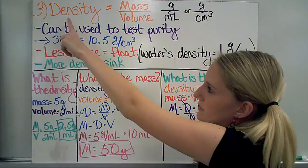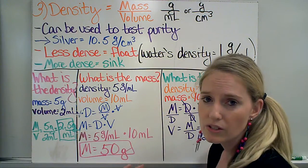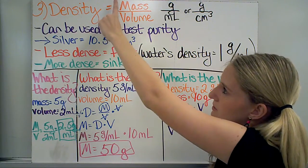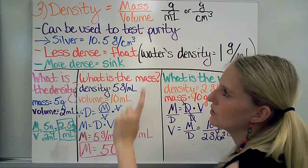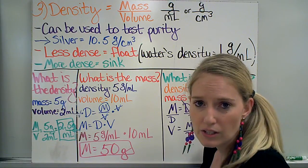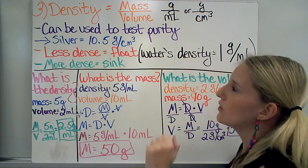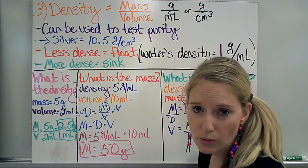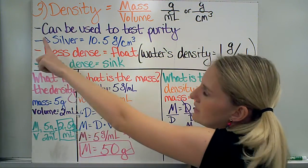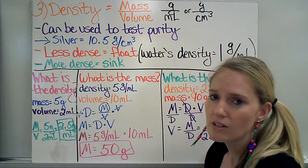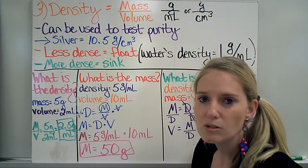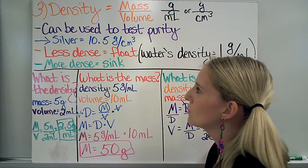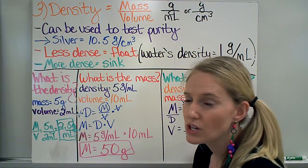Another example of a physical property is density, which we're going to use an equation to help us calculate. We're going to take the object's mass divided by its volume. The mass is typically measured in grams, and the volume could be measured in milliliters or centimeters cubed, because those are equal volumes. I can use density to test how pure a substance is, because each substance has a specific density. Silver is always 10.5 grams per centimeter cubed, for example, if it's pure silver.